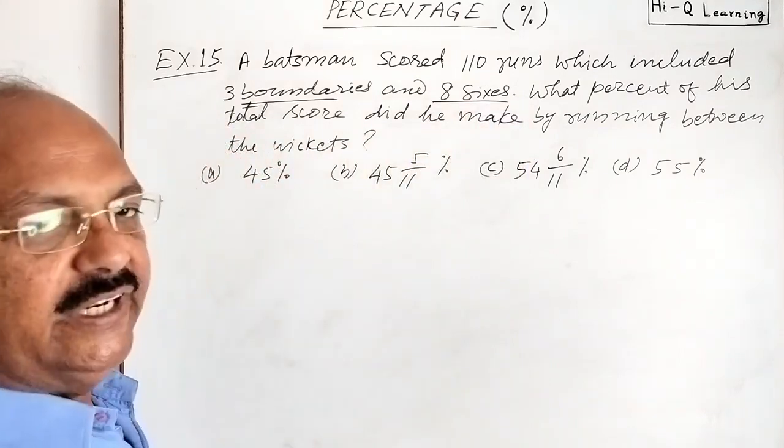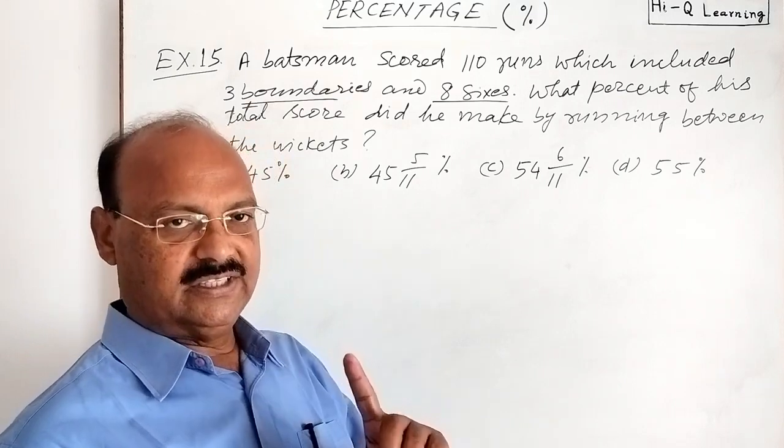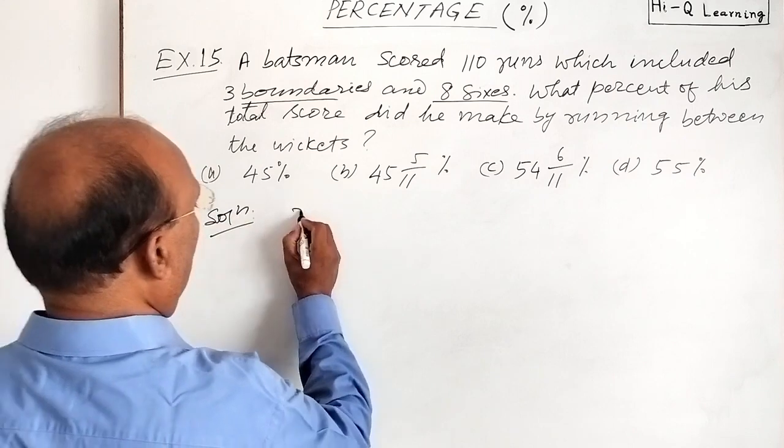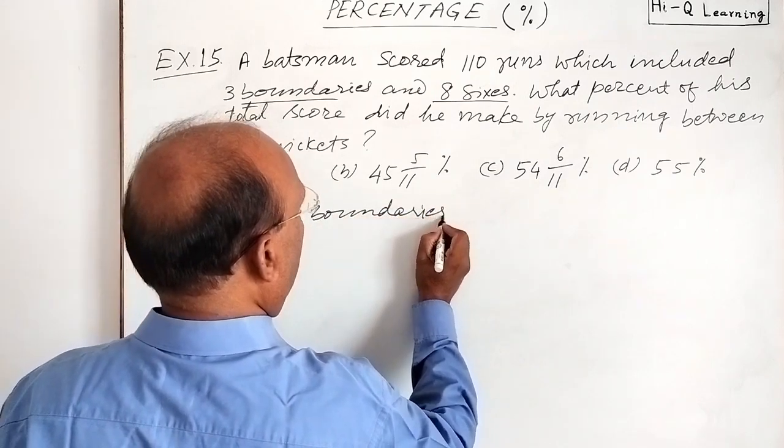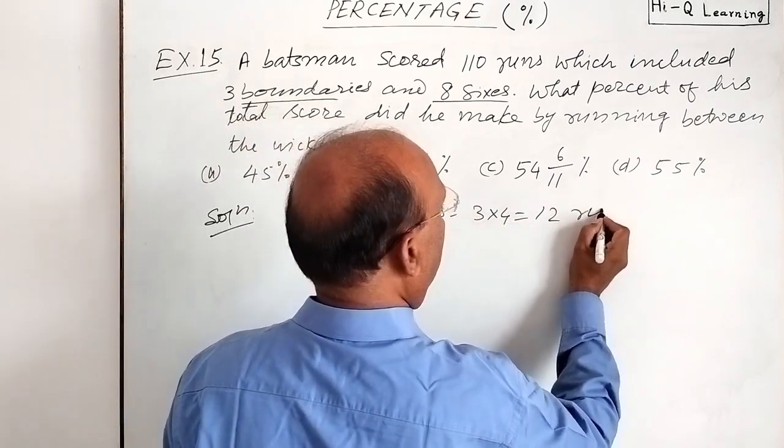So 3 boundaries means how many runs? Generally we take 4 runs in 1 boundary. So let us see the solutions. There are 3 boundaries means 3 into 4 is equal to 12 runs.